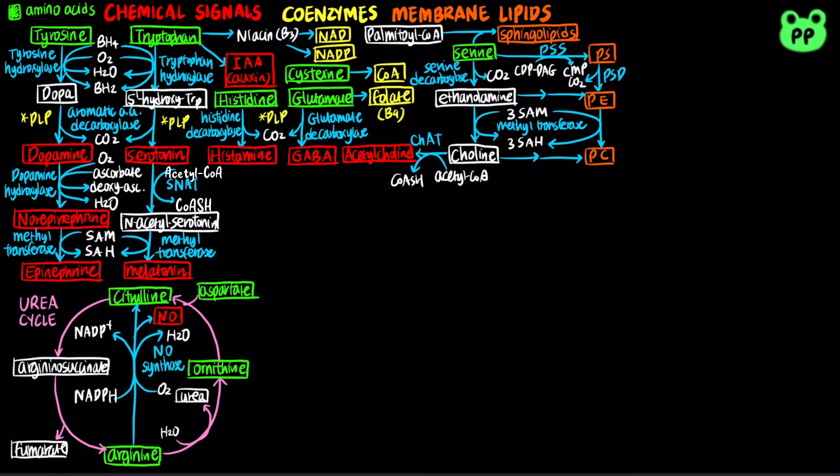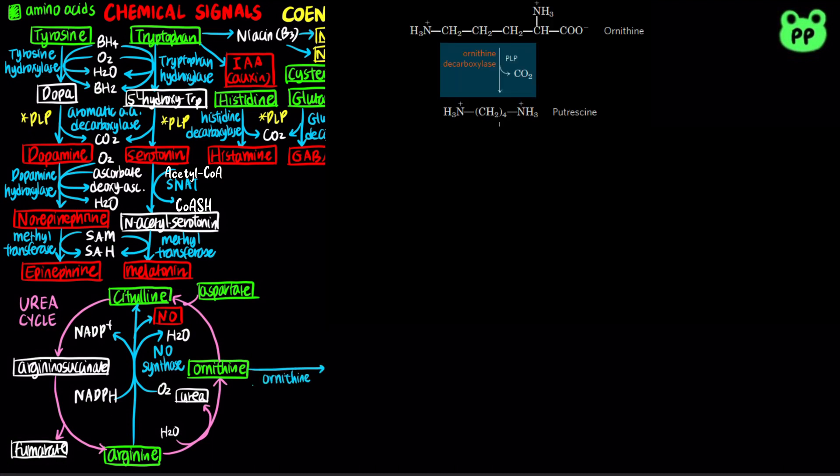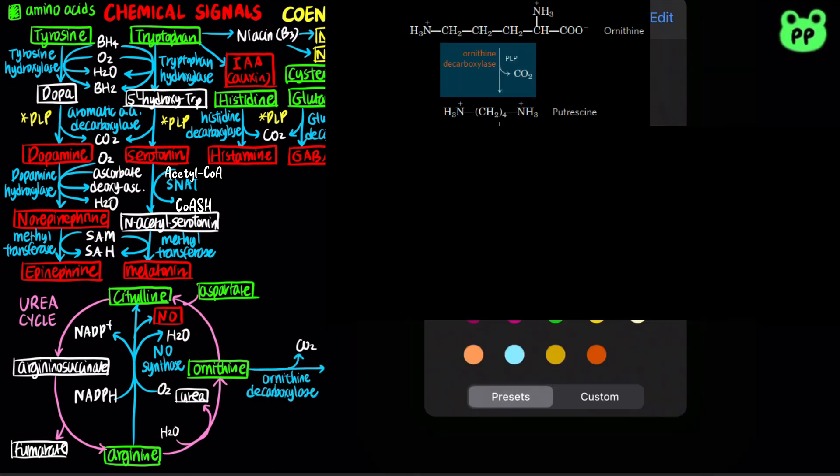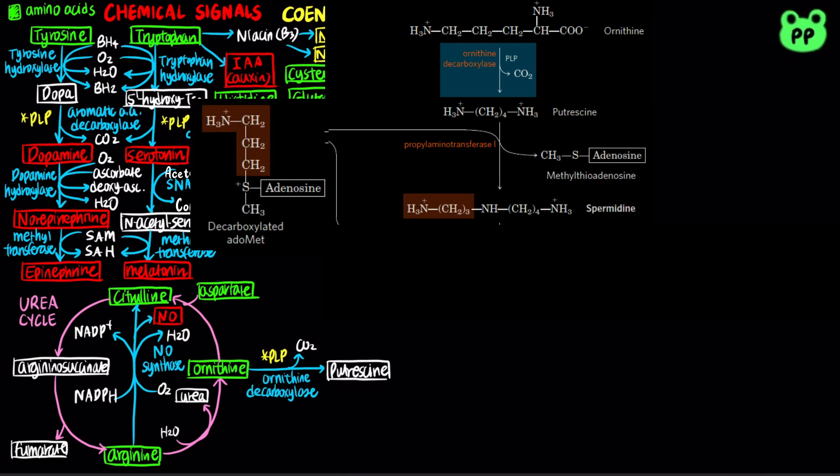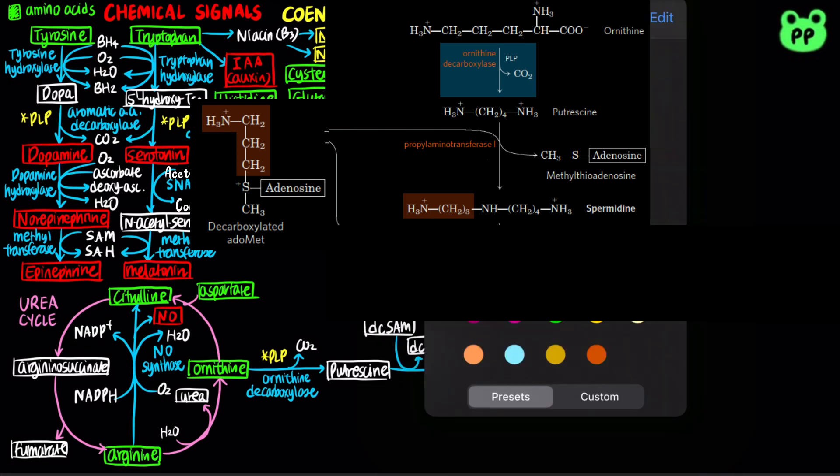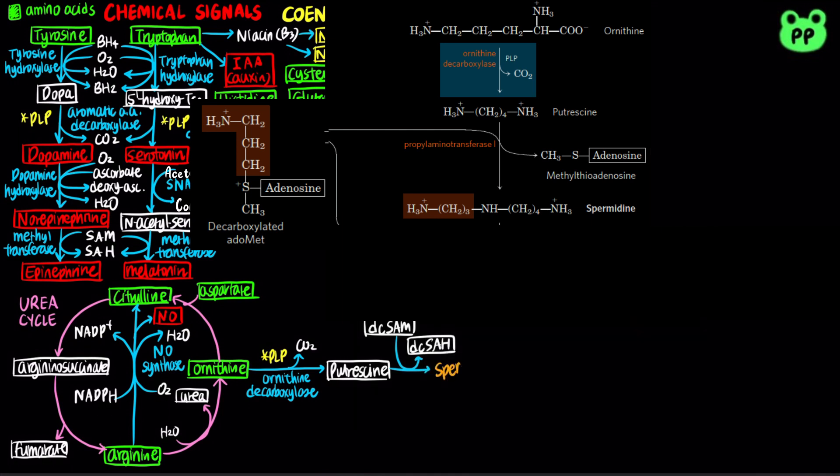Polyamines are synthesized from the urea cycle intermediate ornithine. First, the PLP-dependent enzyme ornithine decarboxylase converts ornithine to putrescine, which combines with decarboxylated S-adenosylmethionine to form decarboxylated S-adenosylhomocysteine as well as spermidine, catalyzed by propylaminotransferase 1, abbreviated as PAT1.